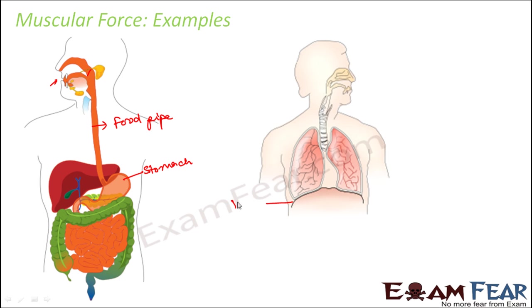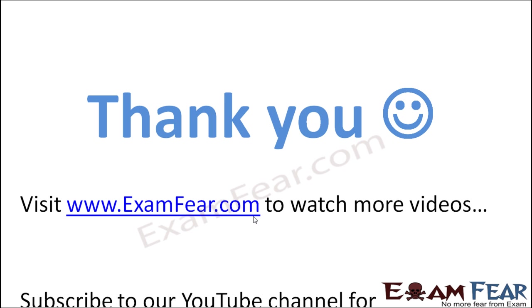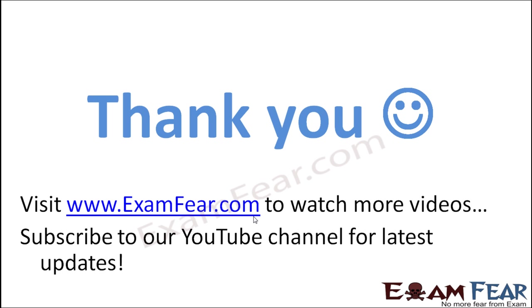In the respiratory system, there is a diaphragm which is muscular in nature. When you breathe out, the diaphragm moves up; when you breathe in, the diaphragm moves down to create more space in the thoracic cavity for the incoming air. So muscular force takes place inside our body as well — not only in visible external body movements, but also in several internal movements. Thank you, please visit examfear.com to watch more educational videos, and don't forget to like and subscribe.